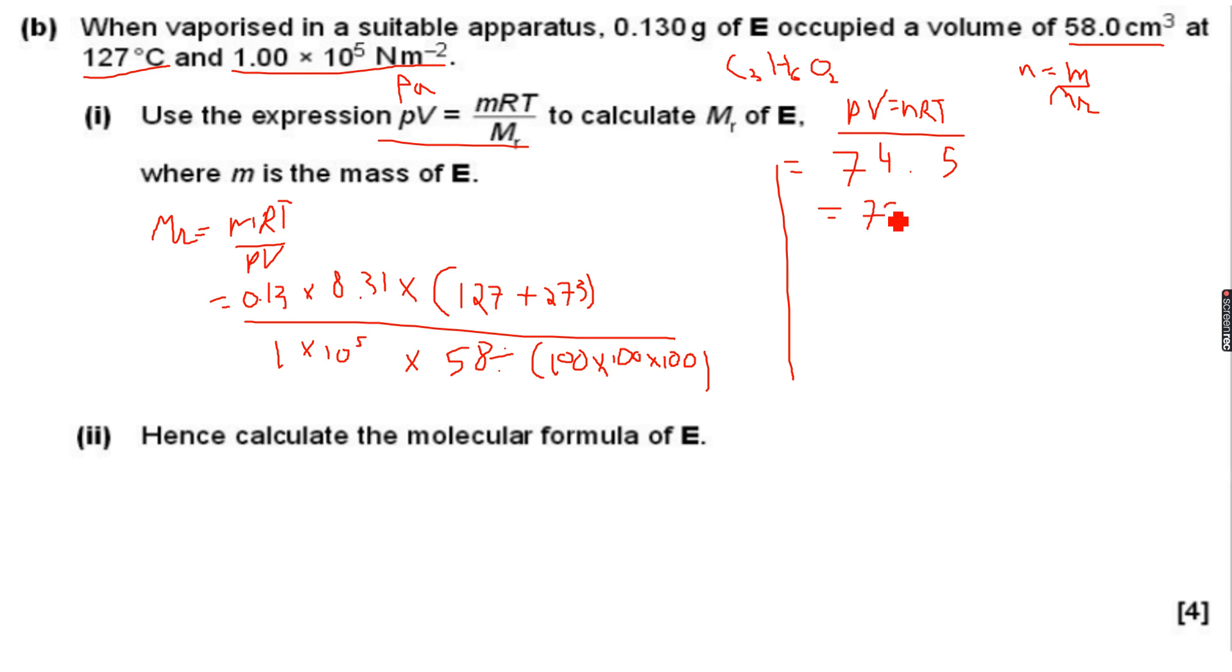Hence calculate the molecular formula of E. What was the empirical mass of E? It was 12 times 3 plus 6 plus 16 times 2. This was the empirical mass. When I do this on my calculator, I get 12 times 3 plus 6 plus 16 times 2 which is 74. Now you can see that the molecular mass and empirical mass...